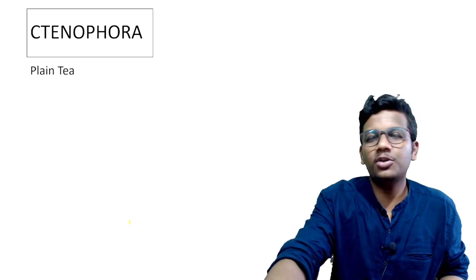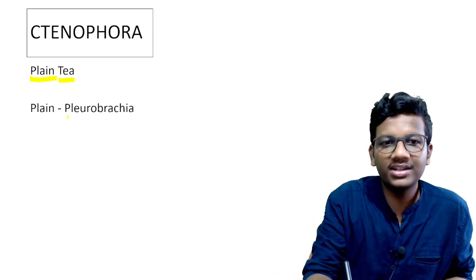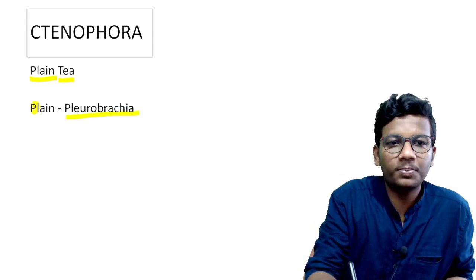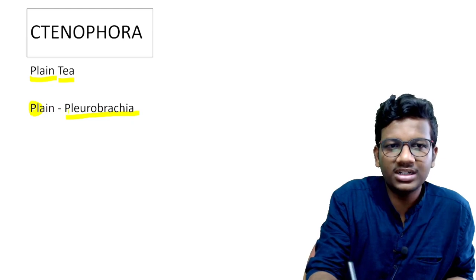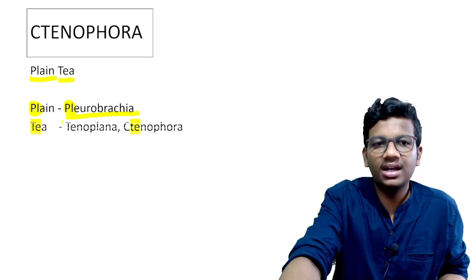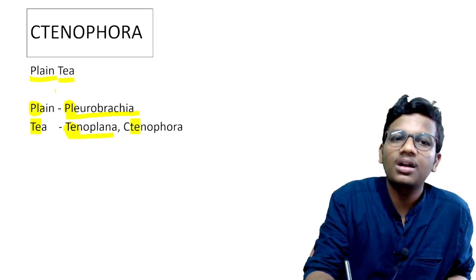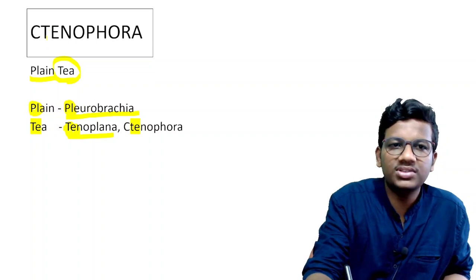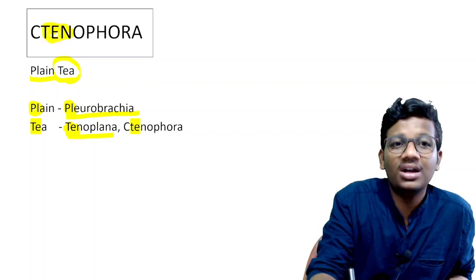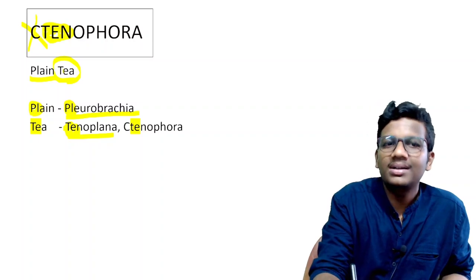Next is Phylum Ctenophora. It has a very simple mnemonic with only two examples: 'Plain T.' Plain signifies Pleurobrachia — first two letters PL match. T means Ctenoplana. The same T also signifies Ctenophora. So for Ctenophora: Plain T — Pleurobrachia and Ctenoplana.